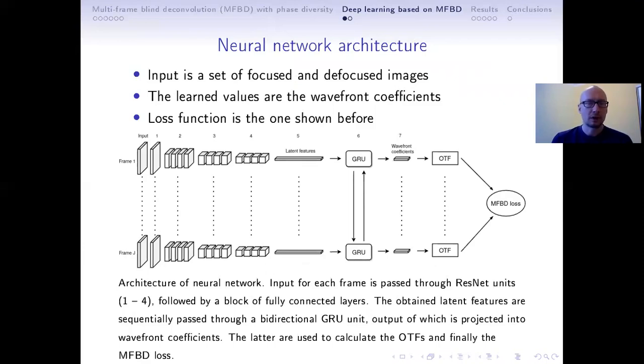So here is the architecture of the neural network we use. It's a typical convolutional neural network with so-called ResNet blocks. On the next slide I will show more details about each of these blocks. But in a nutshell, we feed to the input a pair of focused and defocused images. Then they pass through these ResNet blocks.